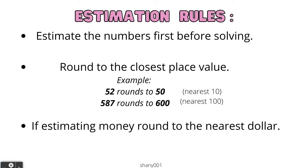Estimation rules. Estimate the numbers first before solving. Round to the closest place value. For example, 52 rounds to 50 because that's the nearest 10. 587 rounds to 600 — that's the nearest 100. If estimating money, round to the nearest dollar.